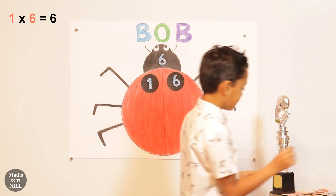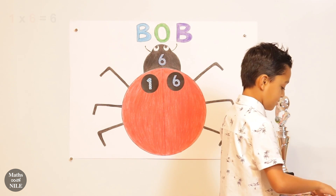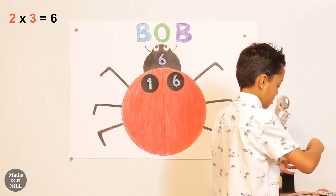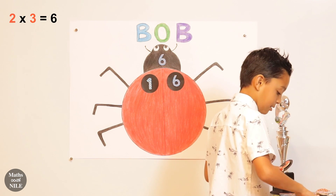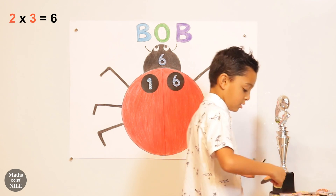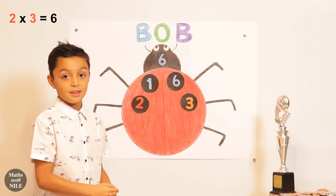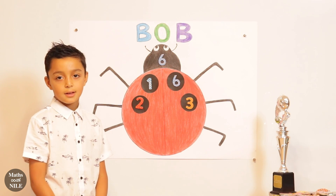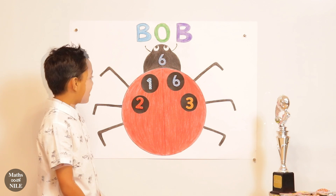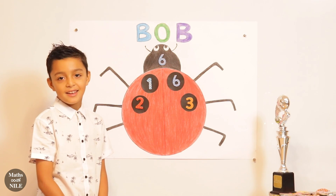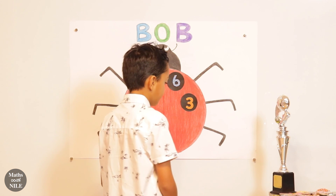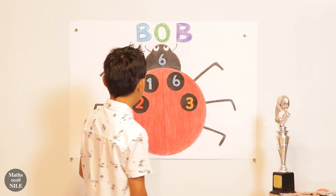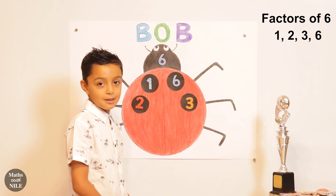What else? 2 times 3 equals 6. So 2 and 3 are both factors of 6. Any other factors of 6? No, that's it. Very good. So how many factors does 6 have? 6 has 4 factors. Yes, 4 factors. Brilliant.